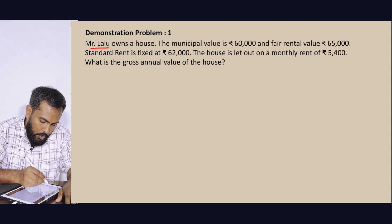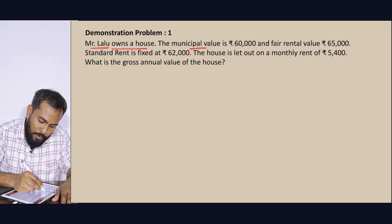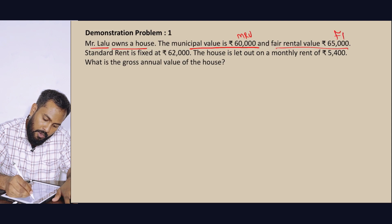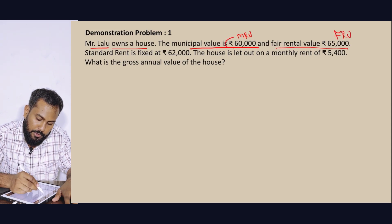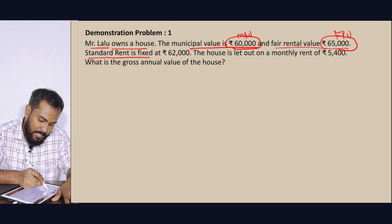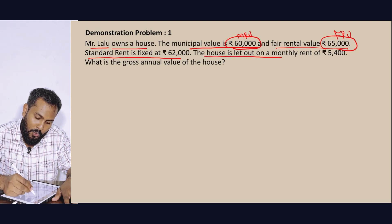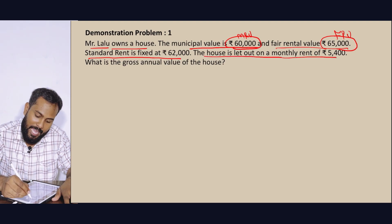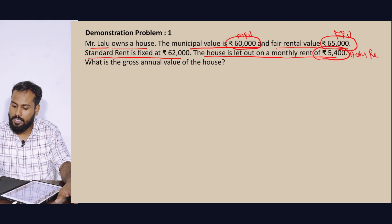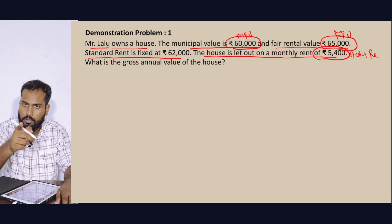Mr. Lalu has a house. Municipal Rental Value — MRV. Fair Rental Value — FRV. Municipal Rental Value: 60,000. Fair Rental Value: 65,000. Standard Rental is fixed: 62,000. The actual rent is 5,400 per month. Total is 64,800. Overall: 12,000. Your calculator gives 14,000.